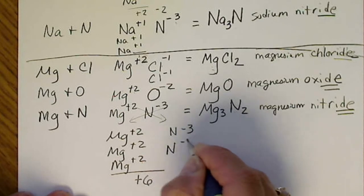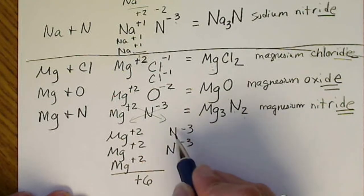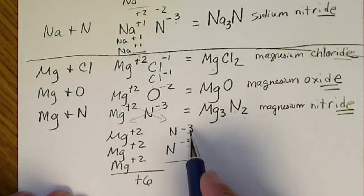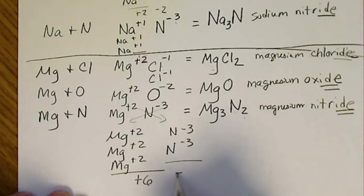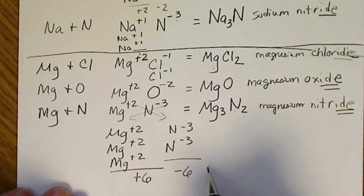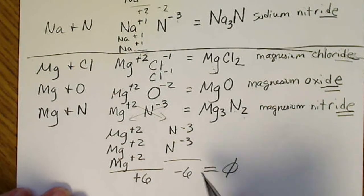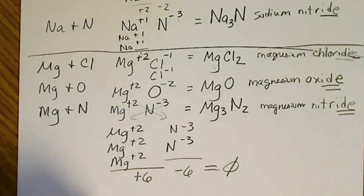And then this N minus 3, we have 2 of them. This 2 means there's 1, 2. And negative 3 and negative 3 adds up to negative 6. So the charges cancel to 0 only when we have this formula.